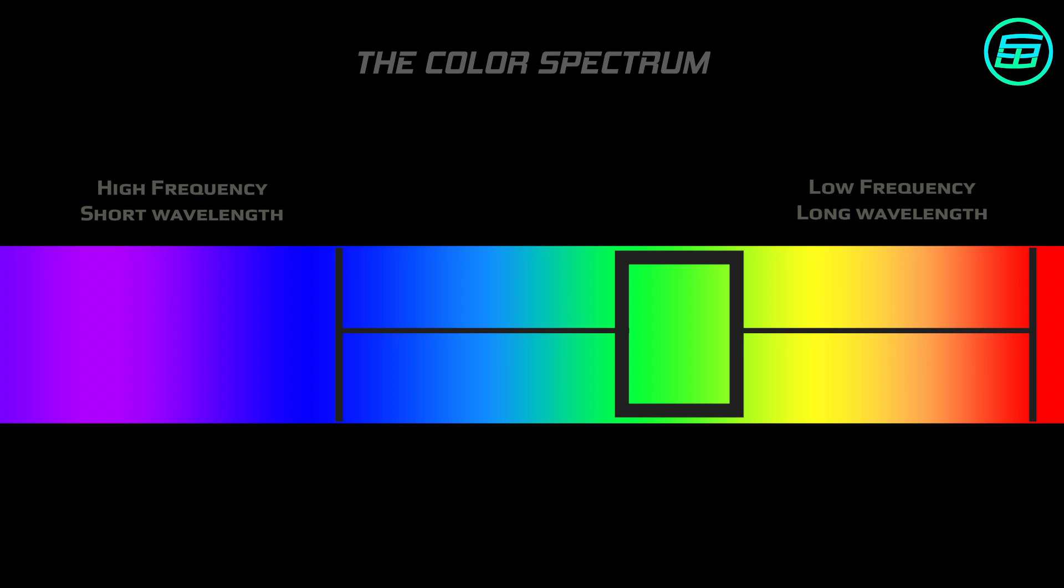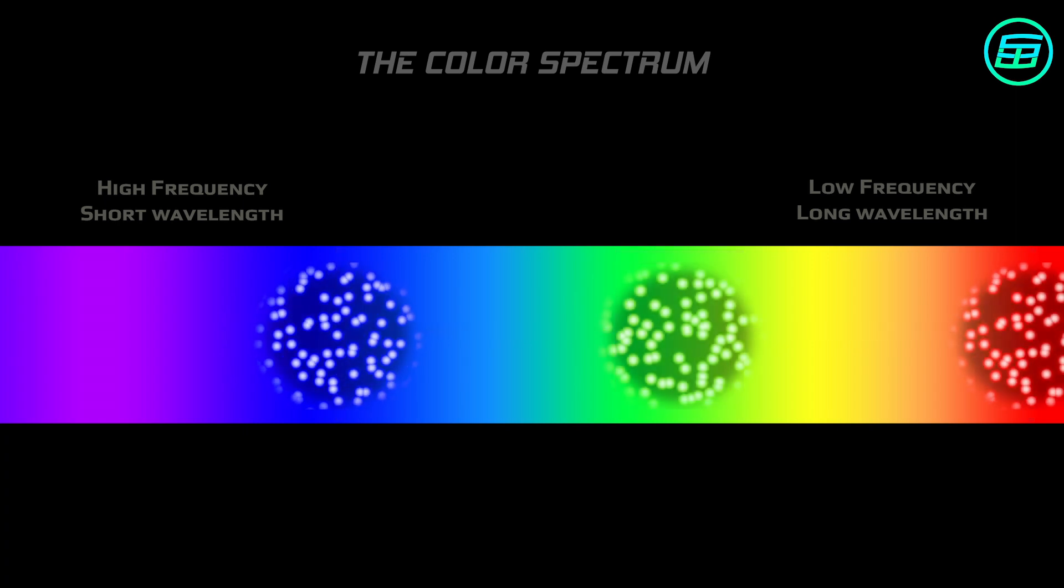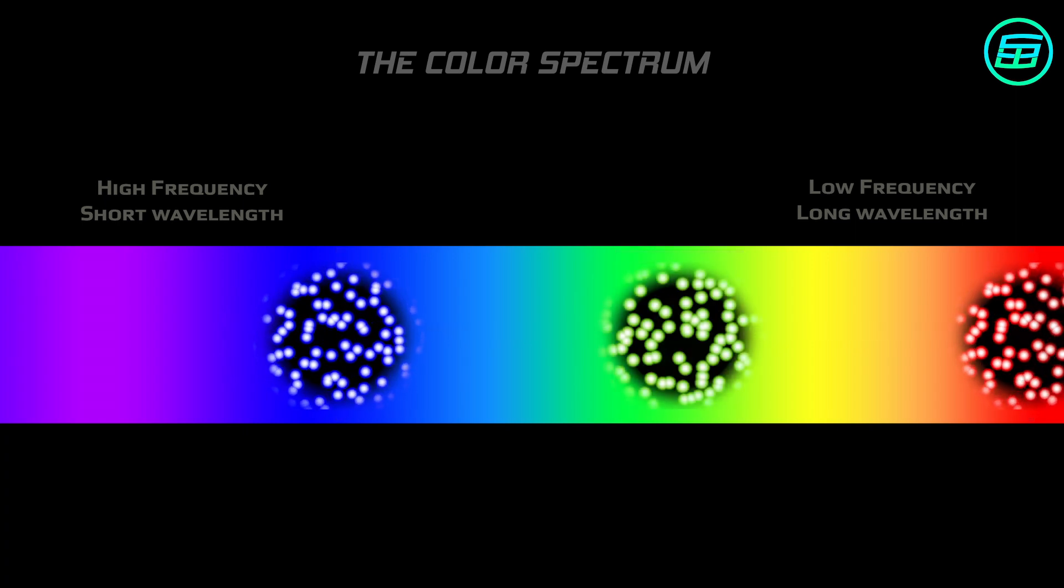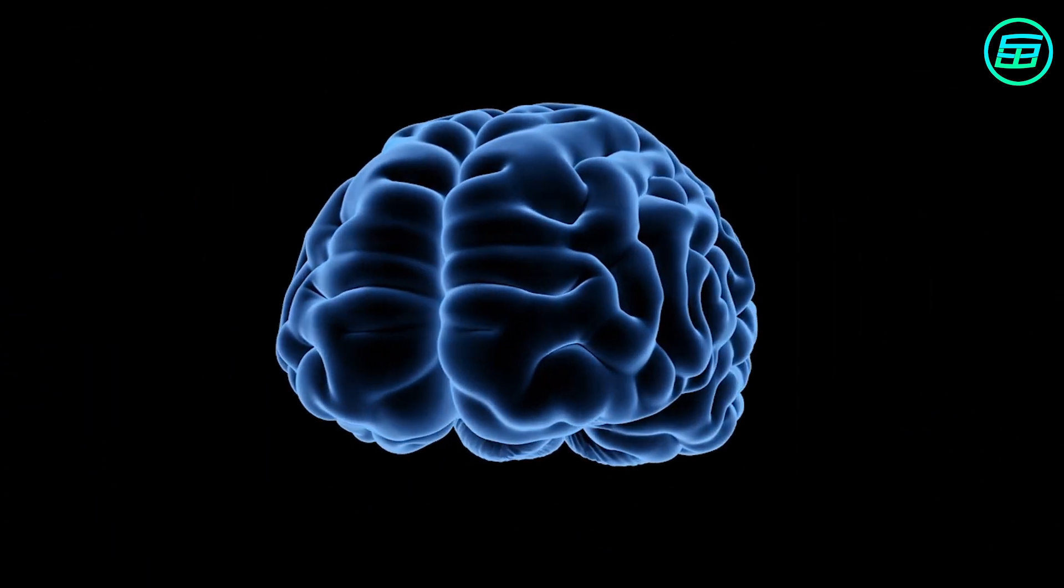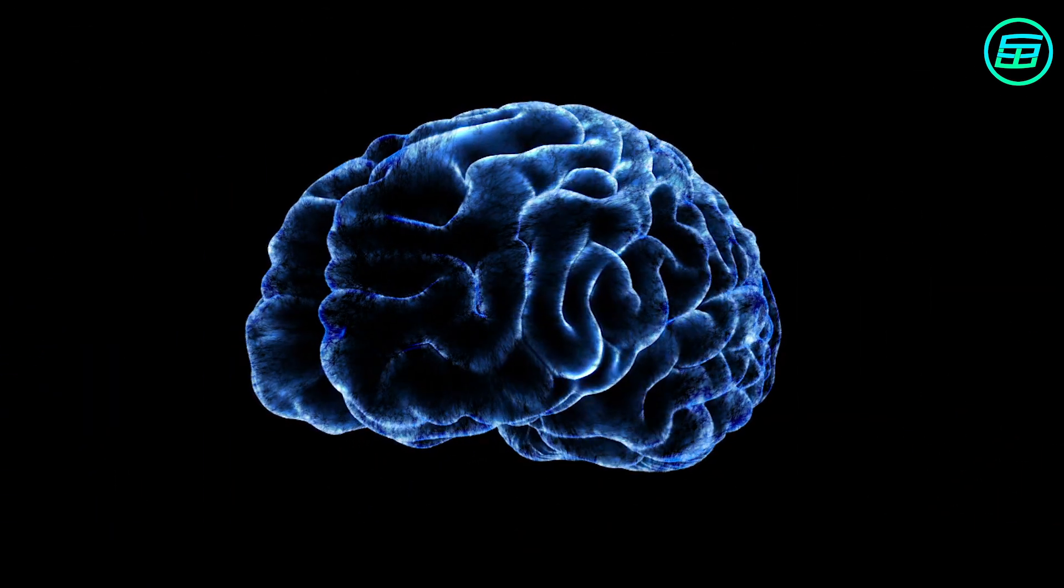That means when red and blue light hit our cone cells, you'd expect our brain to interpret the combination as green. But there's no electrical signal coming from the cone cells that are sensitive to green. The brain faces a dilemma and resolves it by creating a new color, magenta.